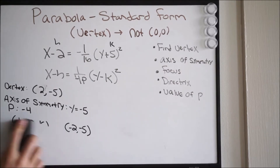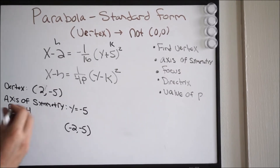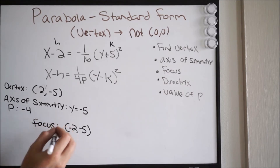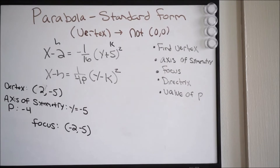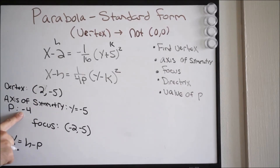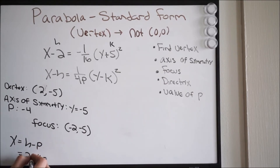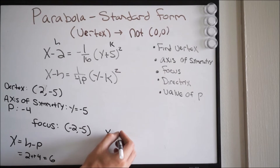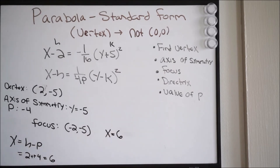Now our last step — let's find the directrix. For a horizontal parabola, the directrix is x = h − p. Our h value is 2, our p value is negative 4. So we have 2 minus (−4) — two negatives make a positive — and we get 6. So our directrix is x = 6.